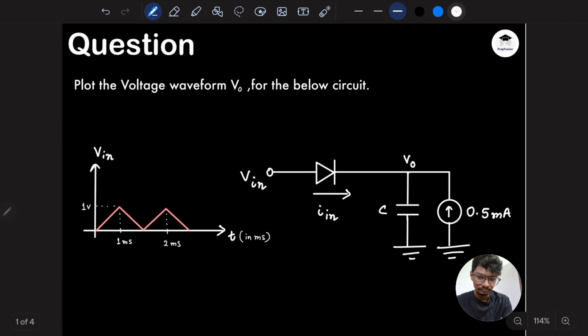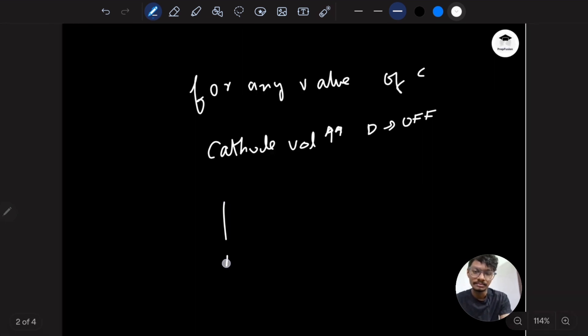If the diode is off, what will the output voltage look like? It will simply be a simple ramp function. From t equals zero it won't be zero - it will be something like this, a straight line. So V_o will be a ramp function.